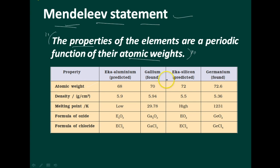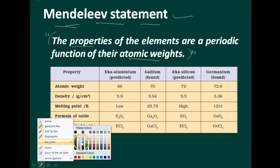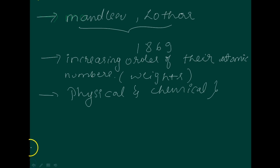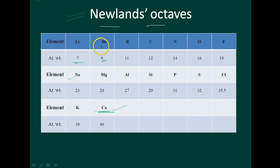I will explain eka-aluminium and eka-silicon later. Mendeleev arranged elements in horizontal rows and vertical columns of a table in order of increasing atomic weights, in such a way that elements with similar properties occupy the same vertical column or group. After that the eighth element — this is about Newlands — but Mendeleev also gave the same kind of explanation. He considered the physical properties and chemical properties and gave the statement. He arranged them in horizontal rows and vertical columns.